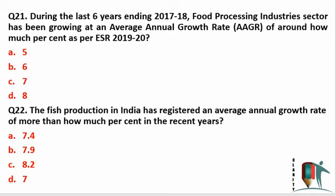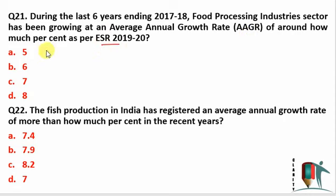Question 21 is related to the food processing industry. During the last six years up to 2017-18, the food processing industry has been growing at an annual growth rate of around how much percent, as per Economic Survey Report 2019-20? The answer is 5 percent — it has been growing at a rate of around 5.02 percent.